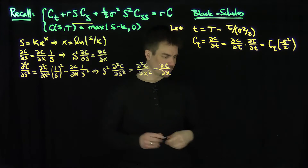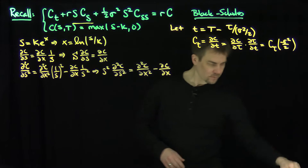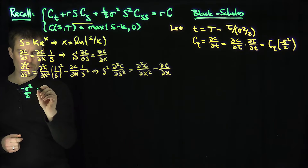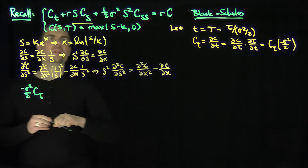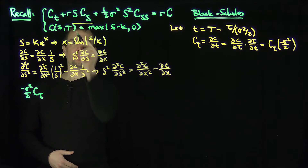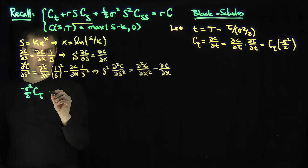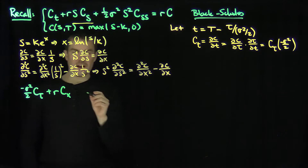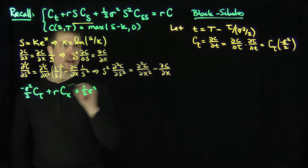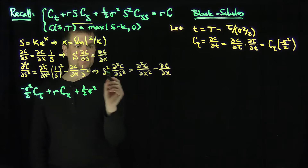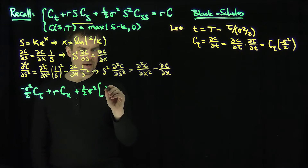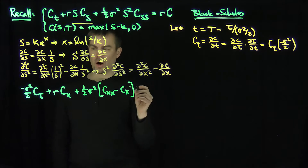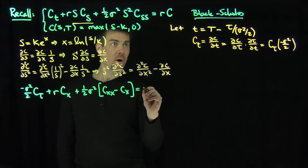So now I have all the ingredients to change the equation. c_t gets replaced with negative sigma squared over 2 times c_tau. Then r·s·c_s gets replaced with r·(partial c partial x). Then one-half sigma squared times s squared c_ss is replaced by one-half sigma squared times (c_xx minus c_x). And that equals r times c.